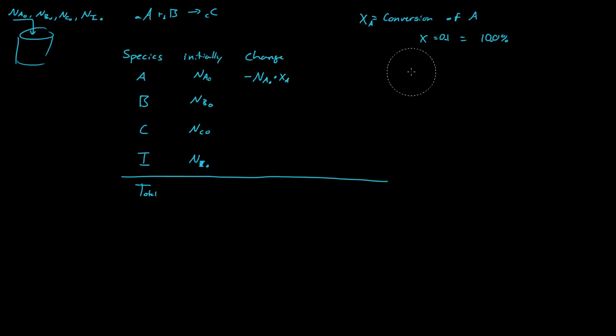Now let's calculate the remaining. Well, the remaining moles of A is equal to N A naught minus the consumption or generation. So we are consuming A, so it's a negative N A naught times X A.